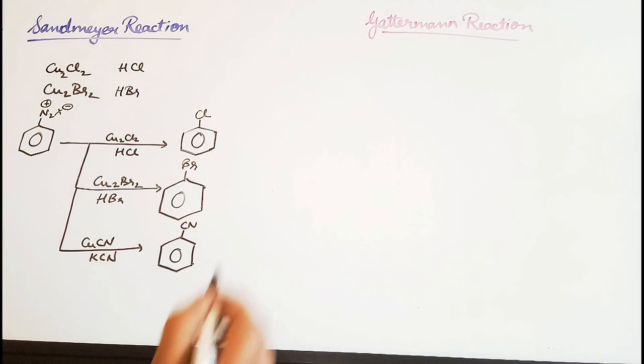Basically cuprous halide, cuprous chloride or bromide, in the corresponding acid leads to the formation of a haloarene. Gatterman reaction is similar to Sandmeyer's reaction.